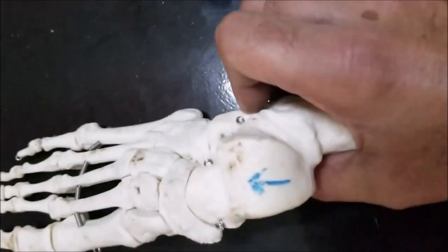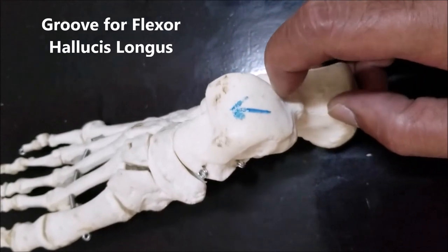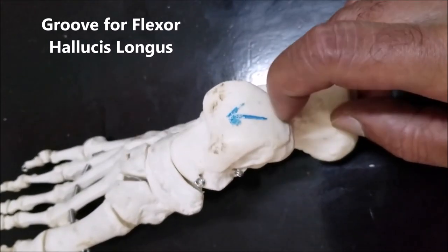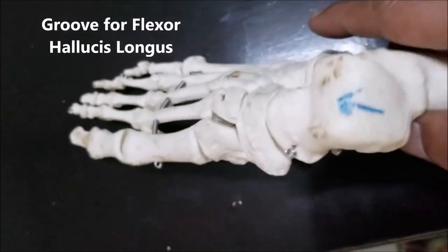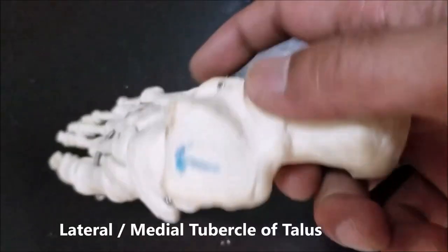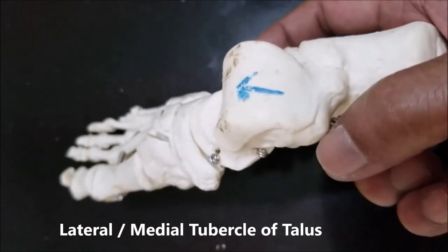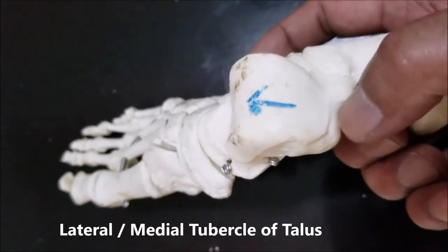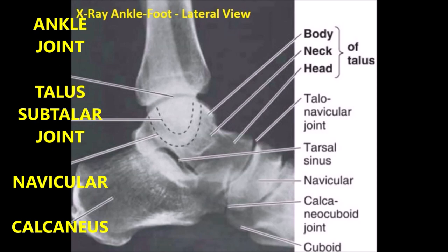On the posterior aspect of the talus there is a groove caused by the flexor hallucis longus tendon. This groove divides the posterior part into a larger lateral portion called the lateral tubercle of the talus, and a smaller medial portion called the medial tubercle of the talus. An X-ray of the ankle in lateral view shows the parts of the talus and its articulation with the calcaneus and navicular bones.